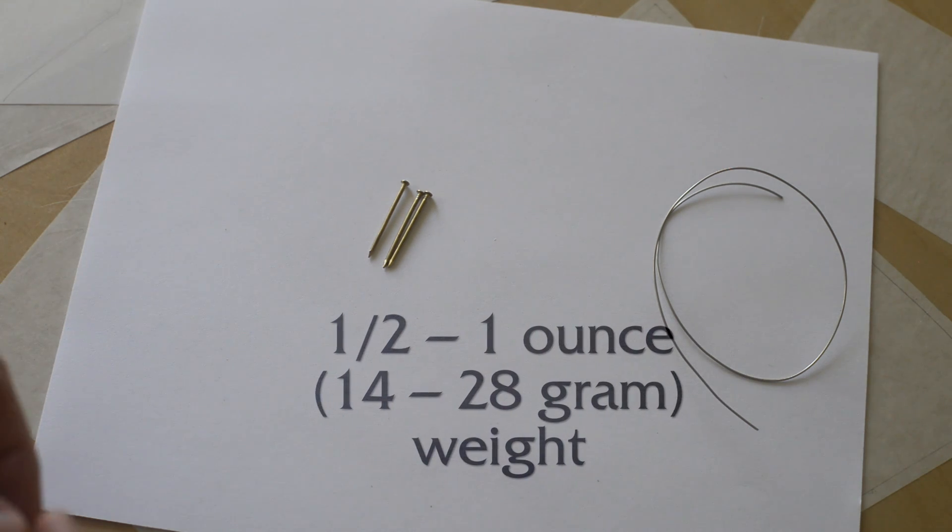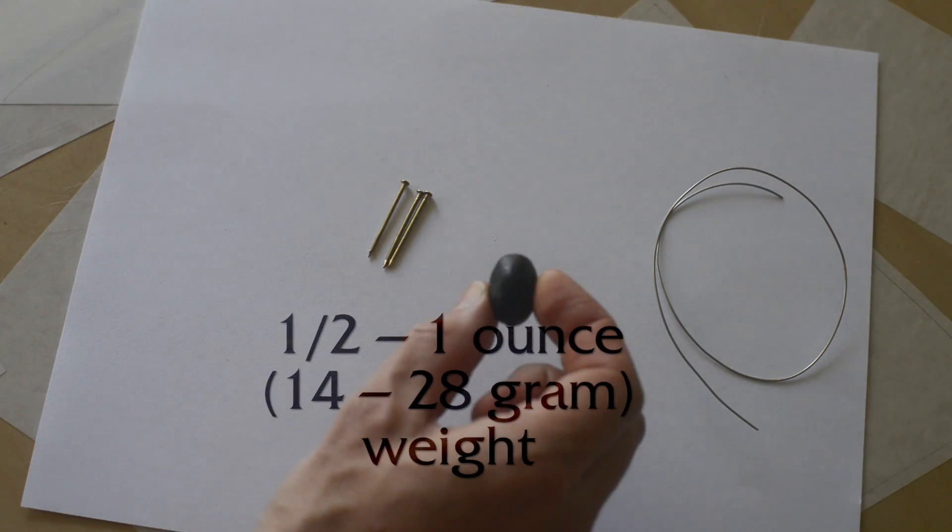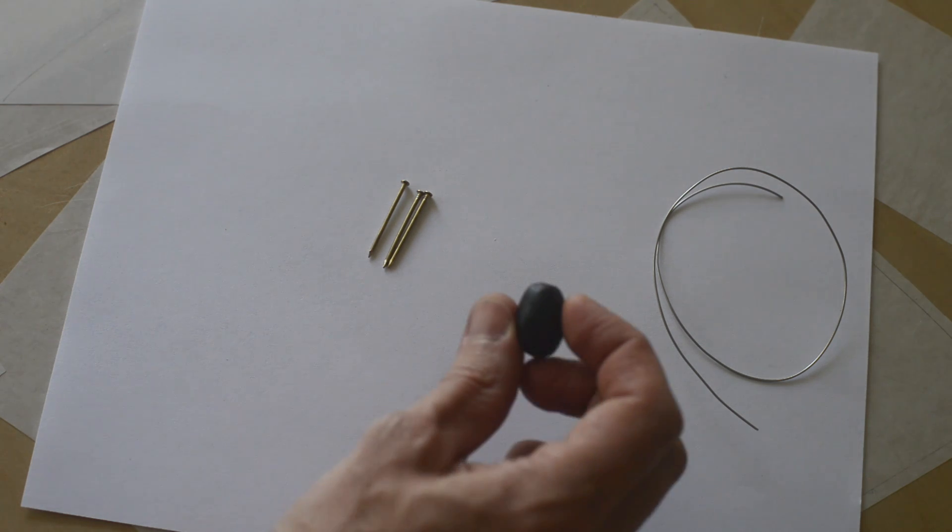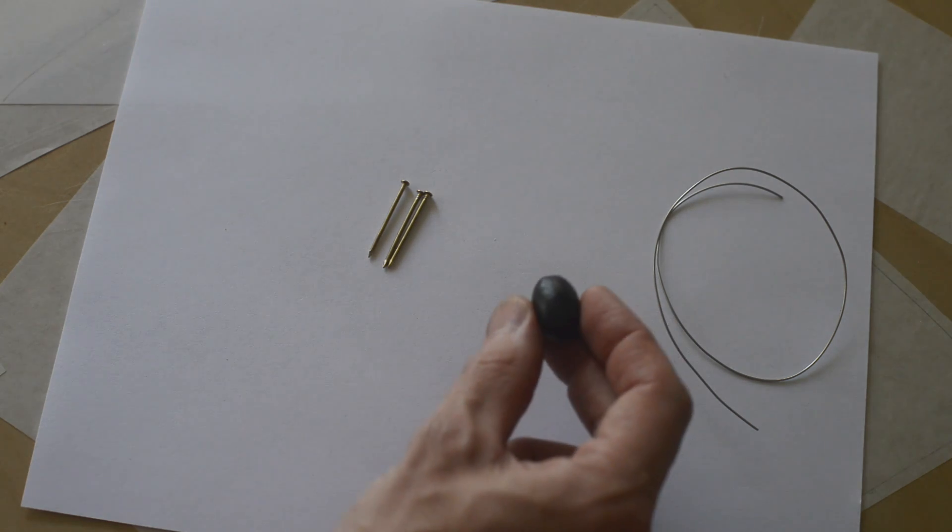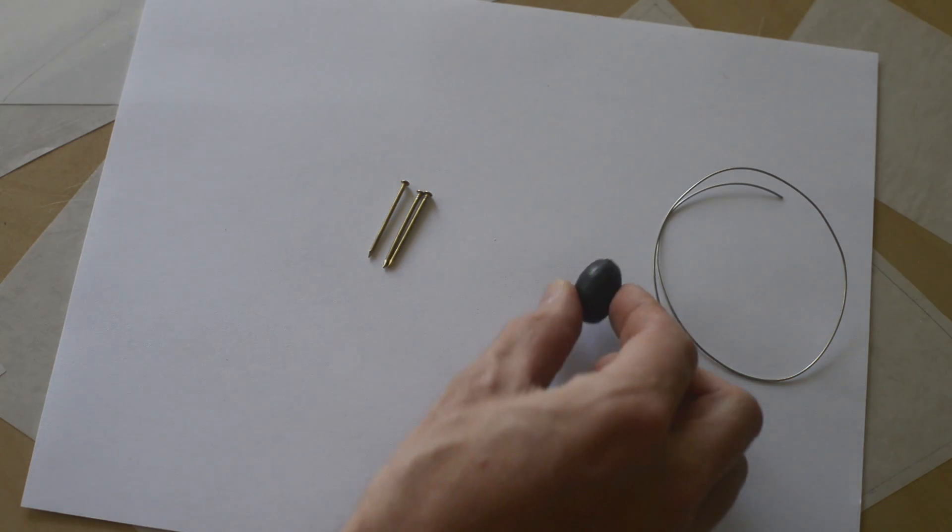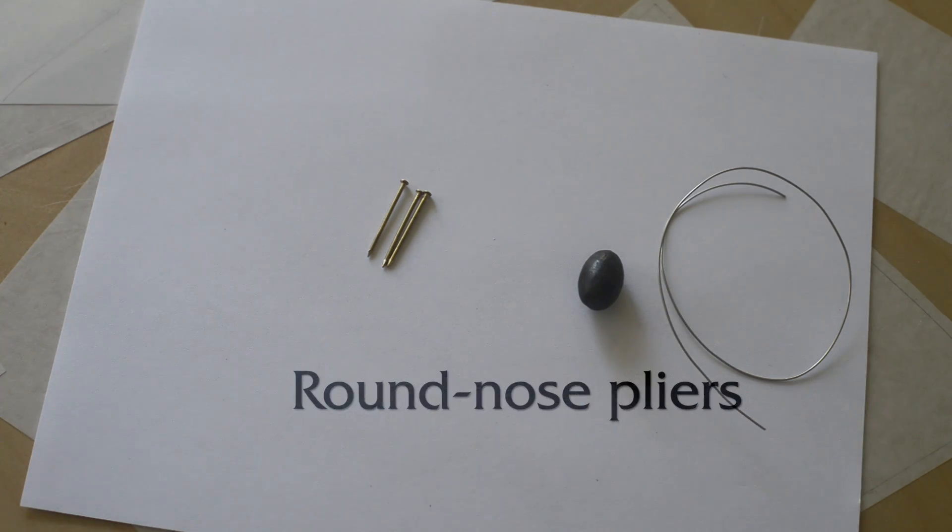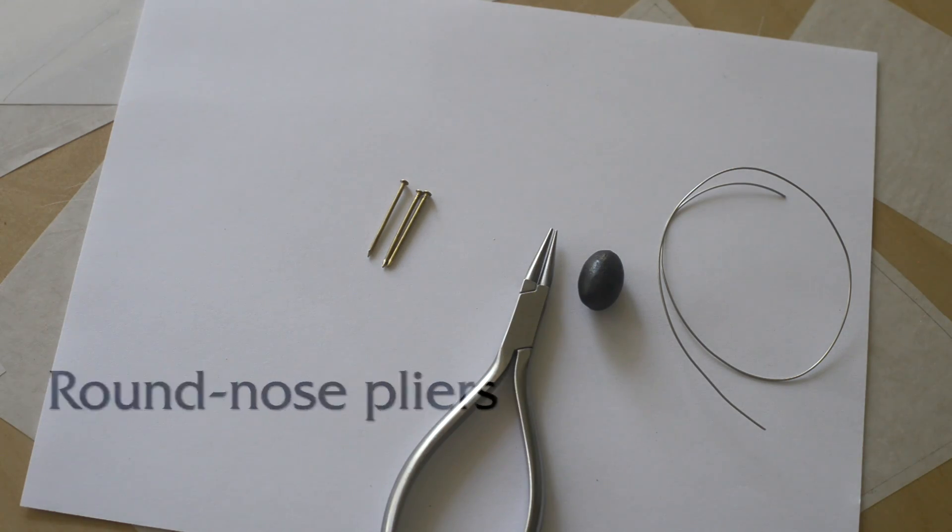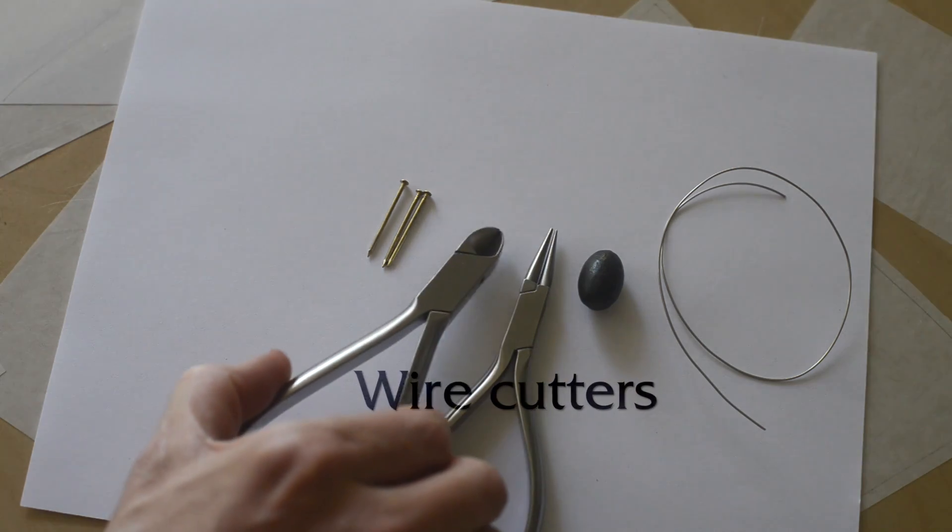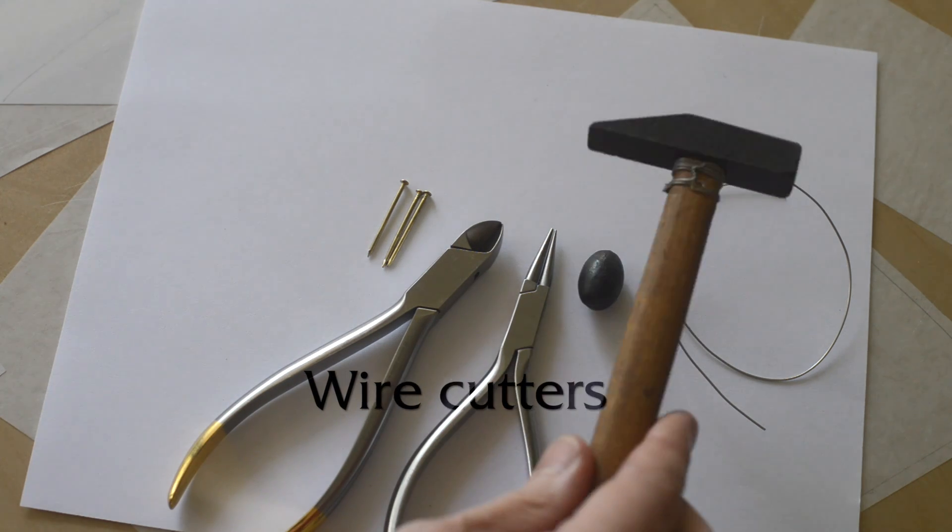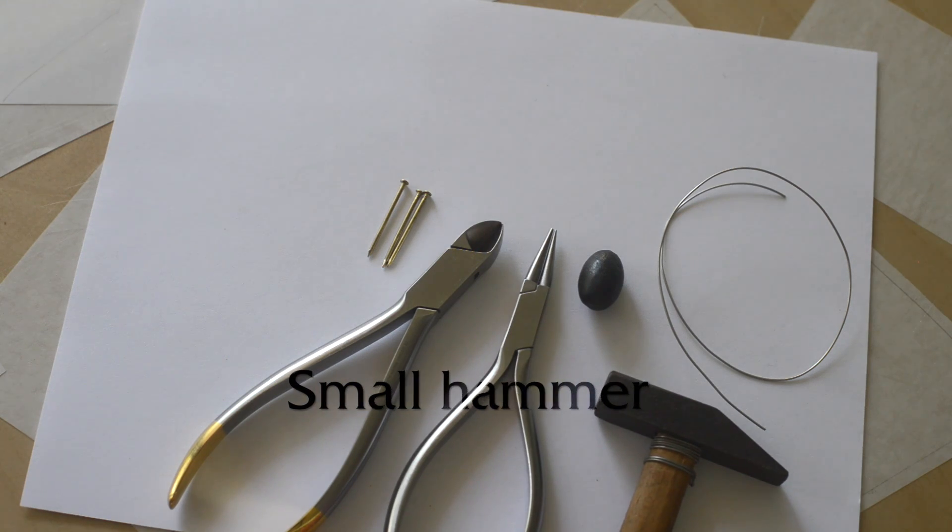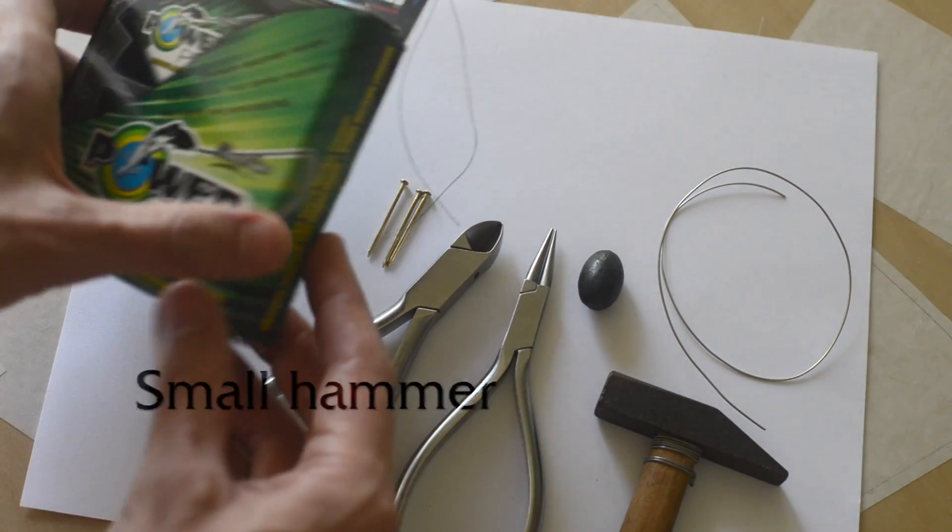You're going to need a weight. Almost any weight will do. I'm using this one ounce, you can use a half ounce, a bit of lead. I dipped this in plastic just so it's nice and safe to touch. You need a way to bend the wire, we're using these round nose pliers, a way to cut the wire, these wire cutters, and a little hammer.